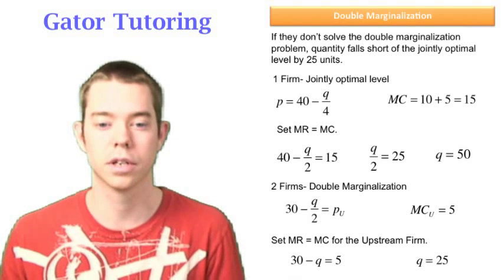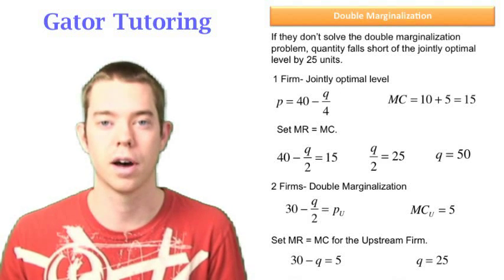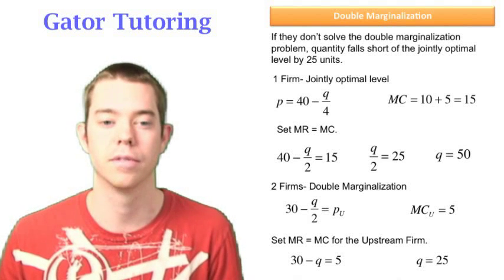This statement is therefore true because we notice with one firm, they're selling 50. With two firms, they're selling 25, we have fallen short of the jointly optimal level by 25 units.